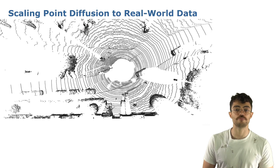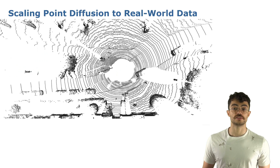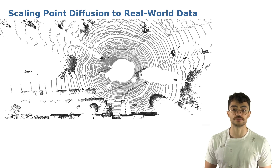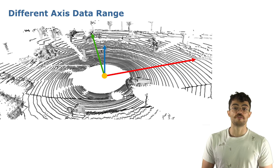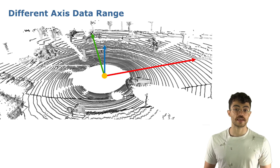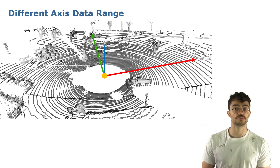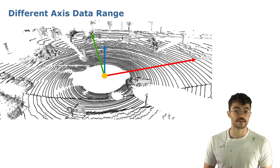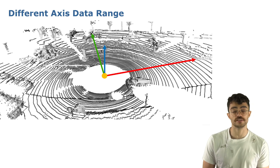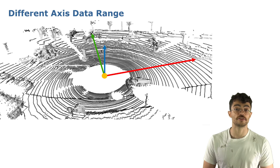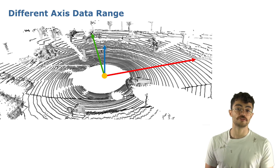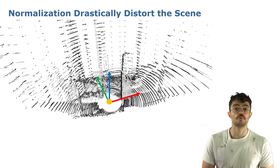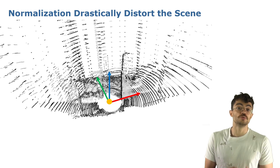The problem of scaling point diffusion to real-world 3D data comes from the point cloud. The data is quite noisy and the object's representation changes a lot depending on its distance to the sensor. Besides that, over different axes in our point cloud, we have different scales of data. This is a problem because during the forward diffusion, the Gaussian noise sampled to be added to the data has the same scale over all axes. Previous shape completion approaches fixed that by normalizing the input data before adding the noise, but this cannot be done at scene scale, because normalizing the scene over all axes results in a drastically distorted scene from which we lose information.